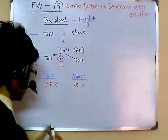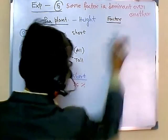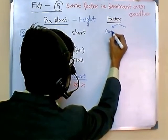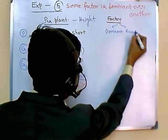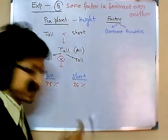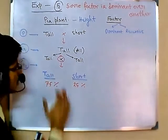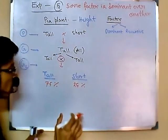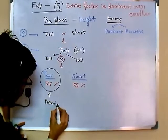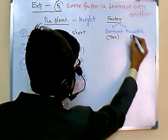We know there is a factor responsible for height, and that factor has two versions. One is the dominant version and the other is the recessive version. The dominant factor is tall — because in generation one all of them are tall, and in generation two the majority are tall. So by looking at these results we can say that tall is dominant over short.